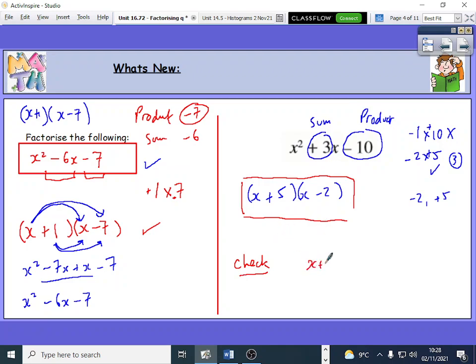If I expand x plus 5, which we've been doing last week, x minus 2, it should give me this result if I've done it right. Let's just double check it. x times x is x squared, x times minus 2 is minus 2x, 5 times x is 5x, and 5 times minus 2 is minus 10.